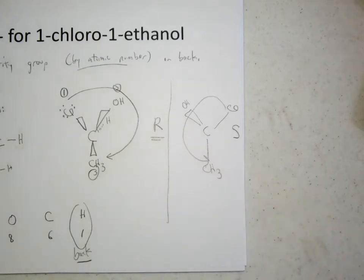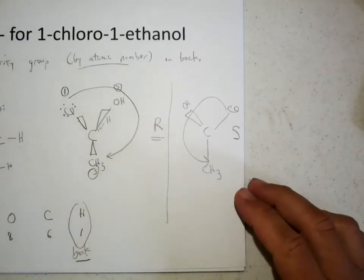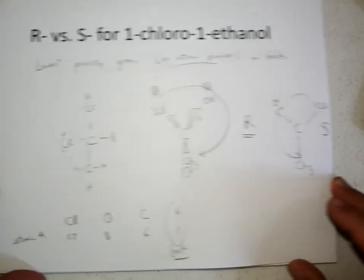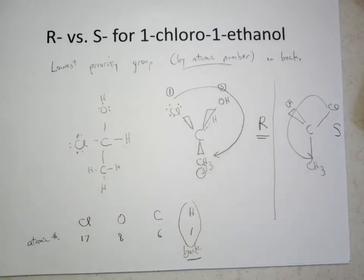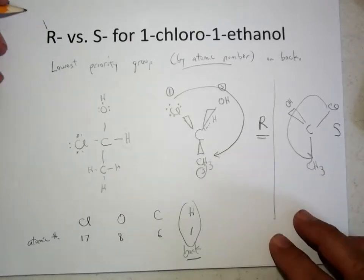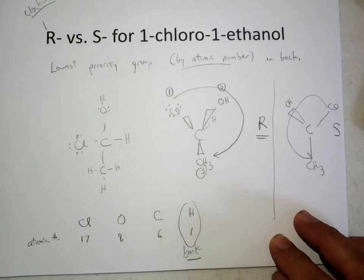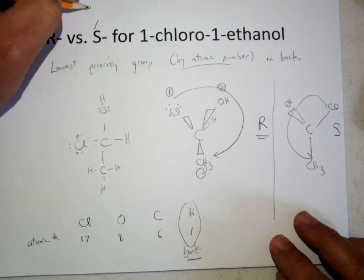So two different optical isomers, R and S. R is clockwise with respect to the priority of rotation when the lowest priority group is in back. And S is counterclockwise.